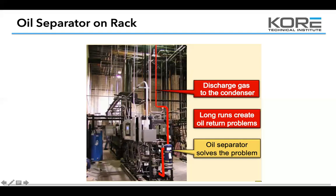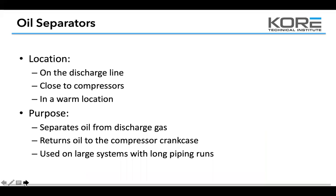On the oil separator on the rack, discharge gas comes in, goes through the separator, and then goes up to the condenser. The oil separator's location is on the discharge line, close to the compressors, in a warm location.